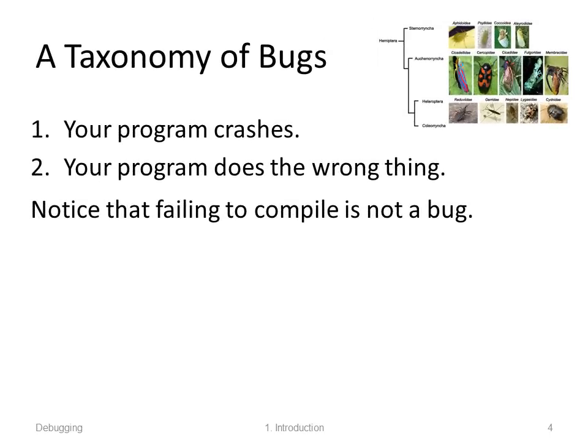A taxonomy of bugs. There are two main kinds of bugs. One is your program crashes, and the other is your program doesn't crash but does the wrong thing. Notice that failing to compile is not a bug — don't come to me with programming assignments that don't compile; you won't be getting any credit for them. Failing to compile is a failure, not a bug. So anyway: program crashes, or works but not quite the way you want it to.